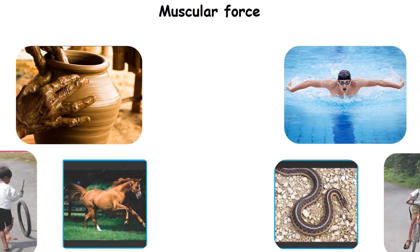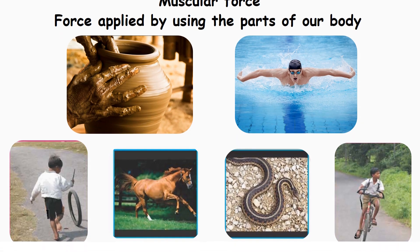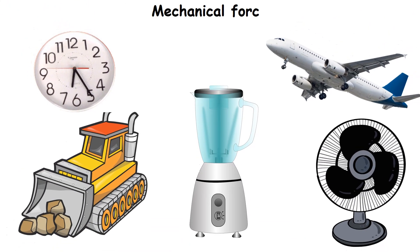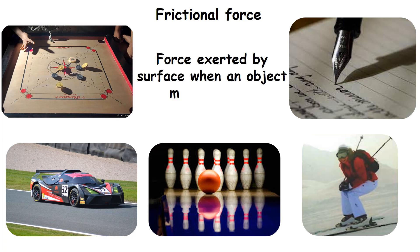Muscular force is the force applied by using the parts of our body. Mechanical force is the force applied by a machine. Frictional force is the force exerted by the surface when an object moves over it.